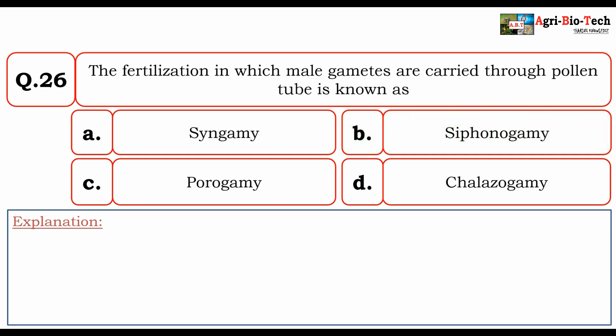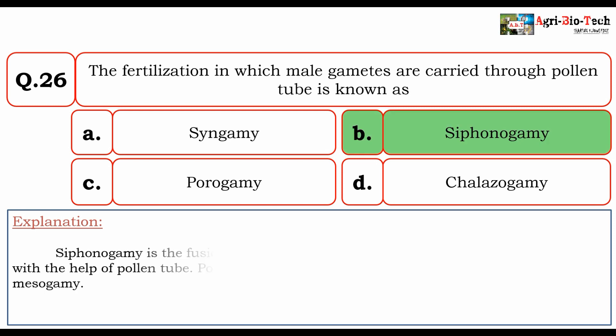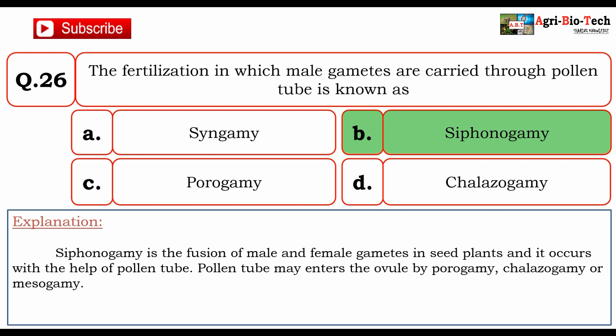The fertilization in which male gametes are carried through a pollen tube is known as: A. syngamy, B. siphonogamy, C. porogamy, D. chalazogamy. The correct option is B. siphonogamy. Siphonogamy is the diffusion of male and female gametes in seed plants and it occurs with the help of a pollen tube. The pollen tube may enter the ovule by porogamy, chalazogamy, or mesogamy.